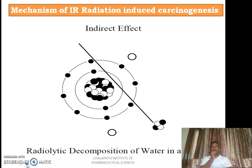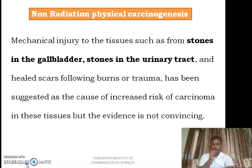That formed free radical will go and bind to the DNA of that specific cell, causing DNA damage followed by mutations. If those mutations happen in oncogenes, anti-oncogenes, and apoptosis regulatory genes, it is followed by the development of a tumor.